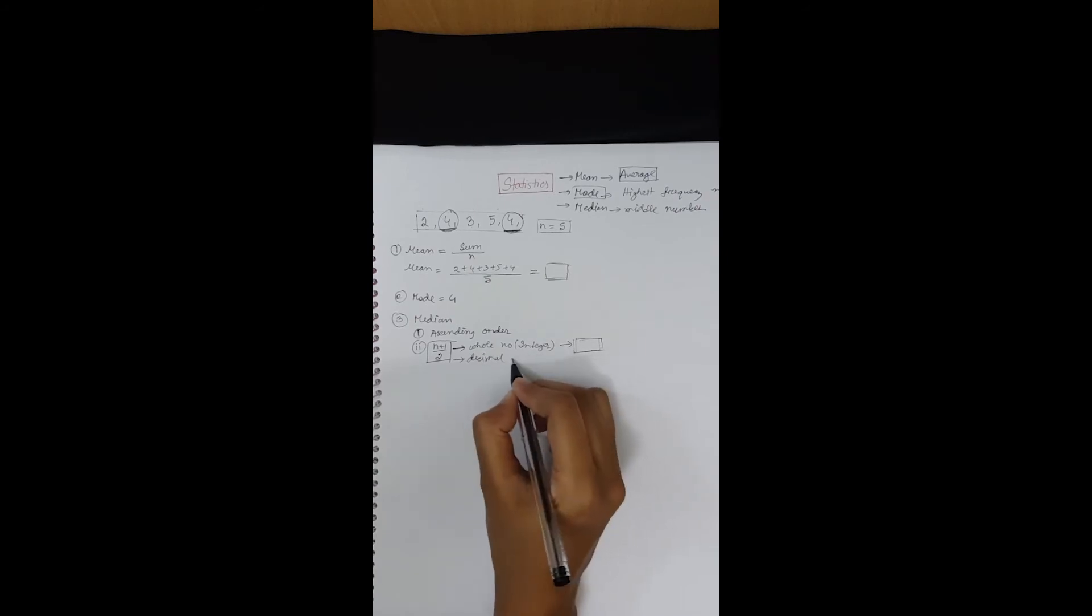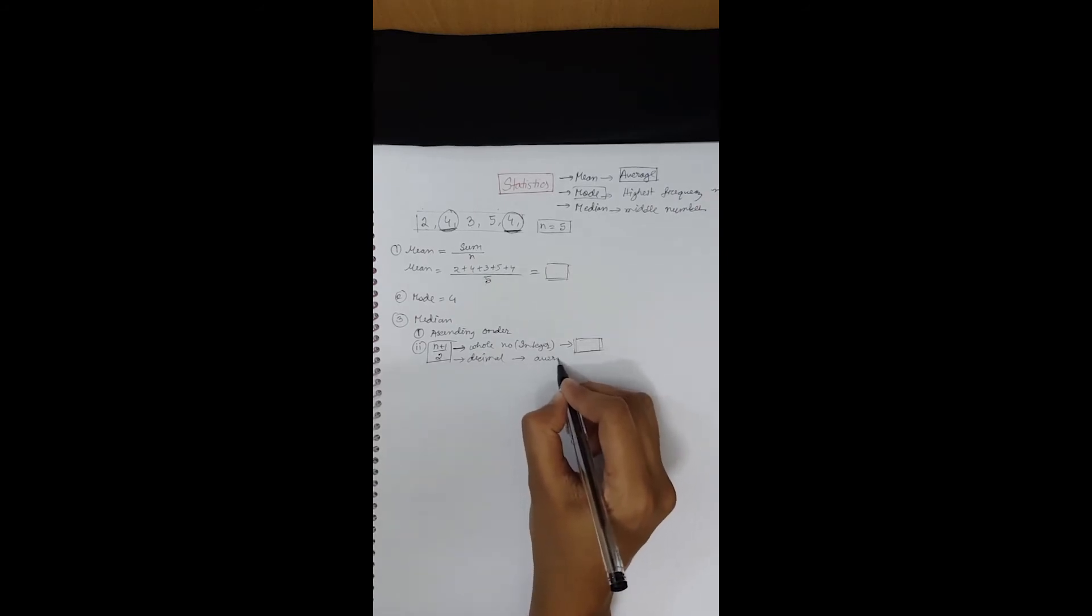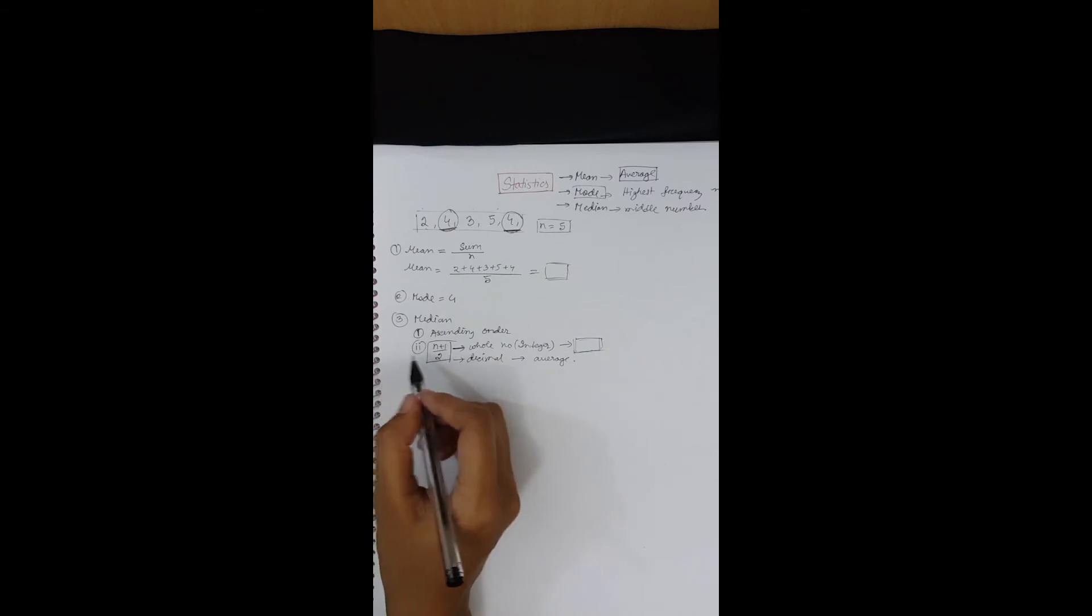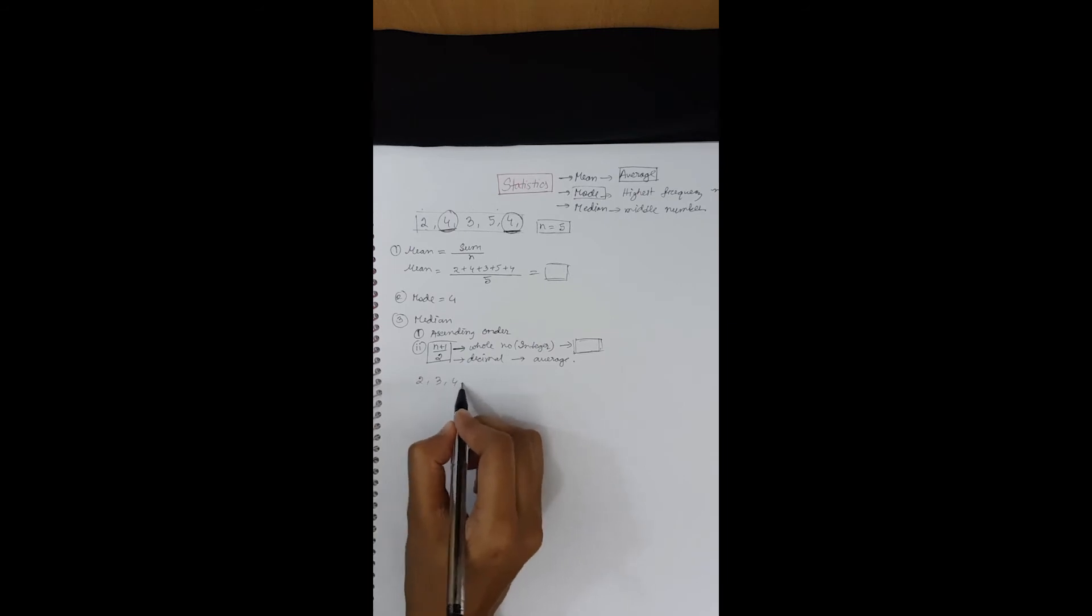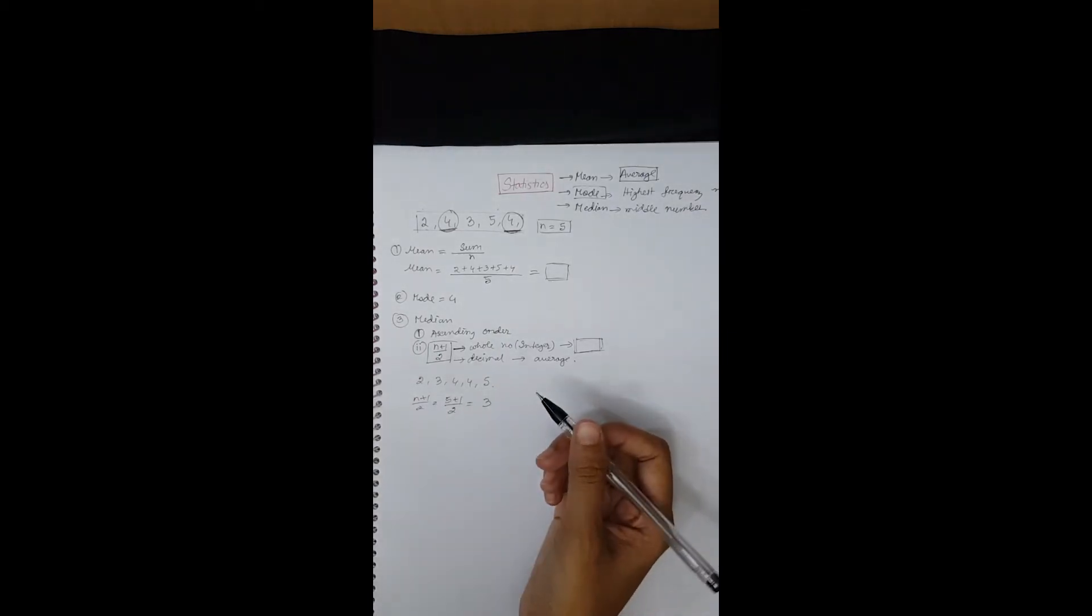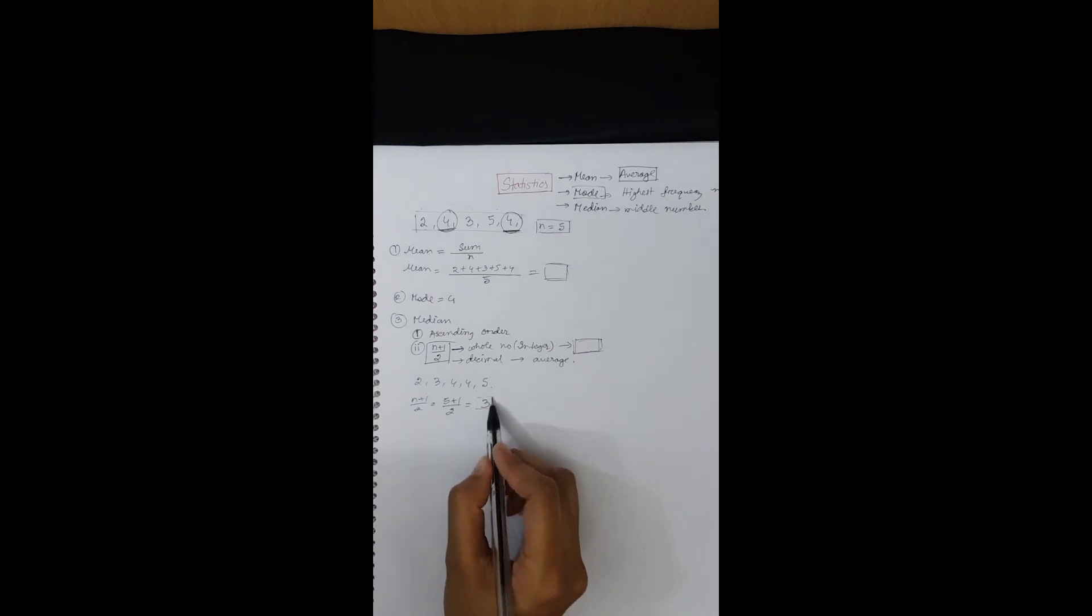Suppose for this math, if we arrange them in ascending order: 2, 3, 4, 4, 5. Then n plus 1 by 2, that is 5 plus 1 by 2, equals 3. So you need to understand that 3 is not the median. 3 just represents that the third term is your median value.